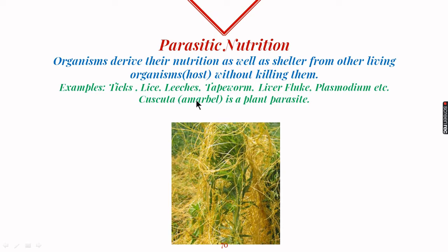Kaskuta is a plant parasite, and in Hindi we call it Amar Bel. In this figure we can see the yellow colored tubular part which is Kaskuta, living on the green colored host plant, taking shelter from it. It also injects certain projections inside the host and sucks the ready-made food into its body, taking both shelter and nutrition from the host plant.